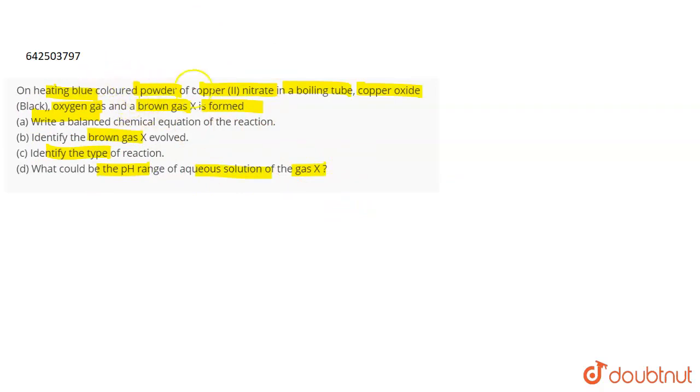So if we talk about this blue powder of copper nitrate which is Cu(NO3)2, when this copper nitrate is heated in a boiling tube, you are providing heat to the system, then it leads to the formation of copper oxide which is CuO, oxygen gas which is O2 and the brown gas which is called nitrogen dioxide is formed.